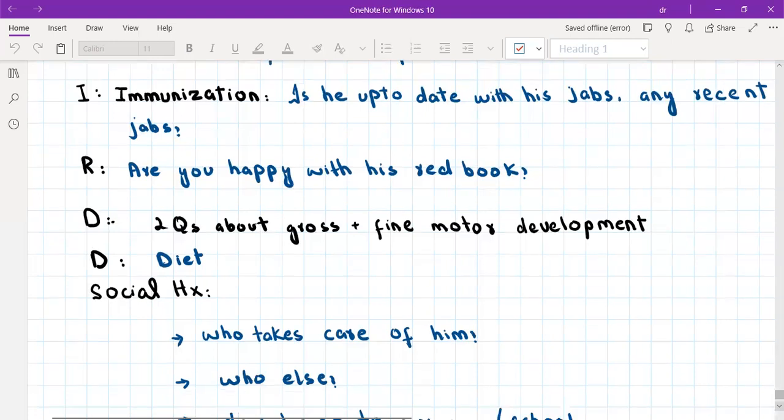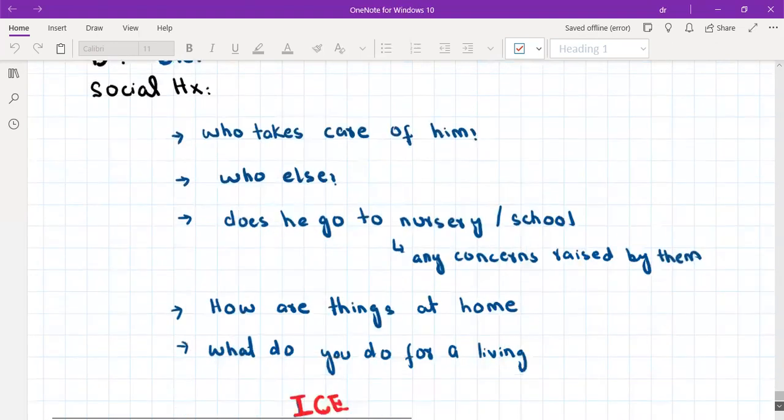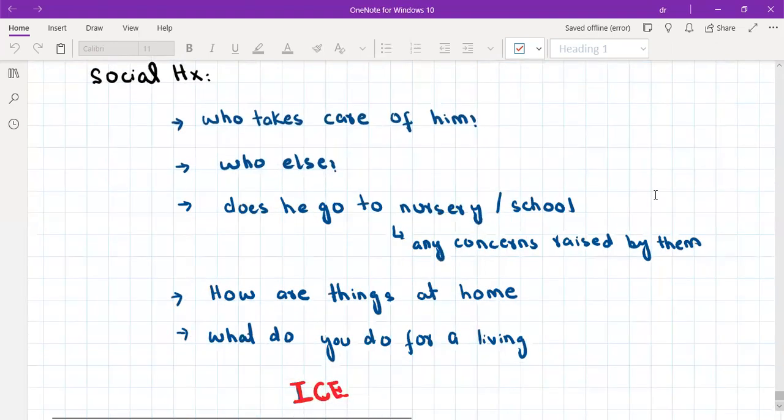Social history. Social history here is basically who is the primary caregiver and how is the environment at home, et cetera. So you will ask about who takes care of the child and who else is involved. So who takes care of the child is basically the primary caregiver. For example, the mom is a housewife. So she's the primary caregiver, but the dad is also involved. So you should ascertain this. And does he go to nursery or school? Any concerns raised by the school or the nursery? Okay. How are things at home? And what do you do for a living? If you think in some cases where you suspect non-accidental injury, in those cases, you should also ask if there is a health visitor or social worker involved. Okay.